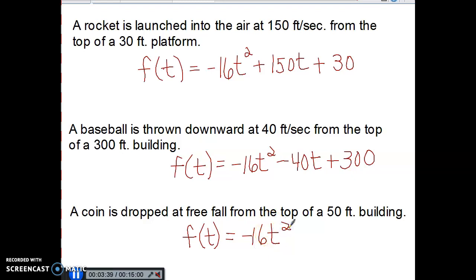Since I'm not applying an additional velocity to the object, that would just be a zero. It doesn't matter if it's a plus or minus. I am above ground level, so that is a plus, and I'm 50 feet above ground level. In other words, my quadratic would be negative 16t squared plus 50 for the third example.